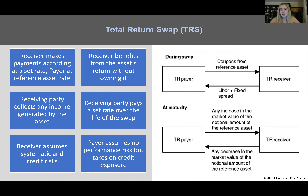Something interesting: the receiver benefits from the return without owning the asset, which means the payer still owns it and can use it to maintain capital adequacy requirements. When you have a certain amount of Tier 1, Tier 2, or Tier 3 capital requirements, you can sell the return to someone else but keep the asset needed to increase your capital adequacy ratios. As the payer you receive LIBOR plus a fixed spread — a floating rate — or alternatively just a fixed rate.